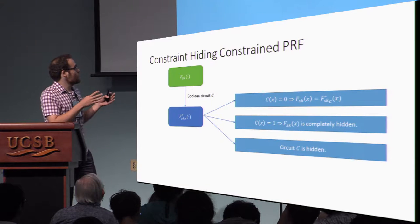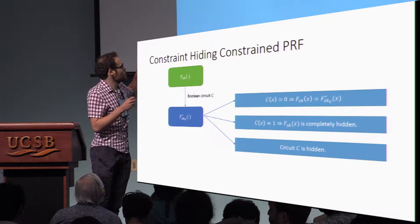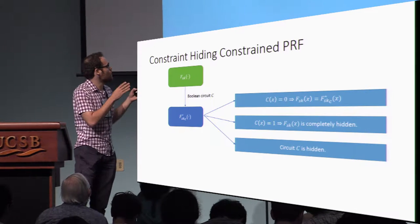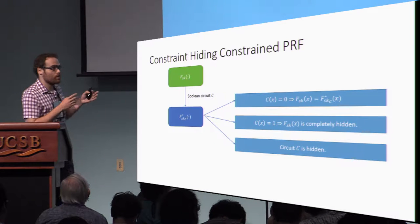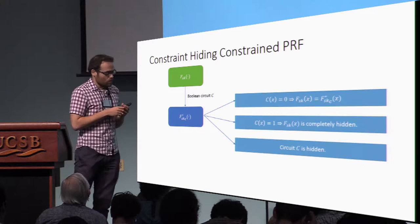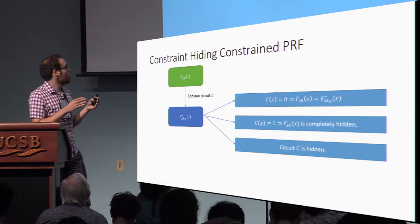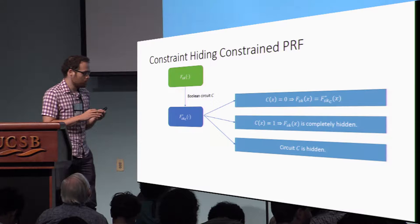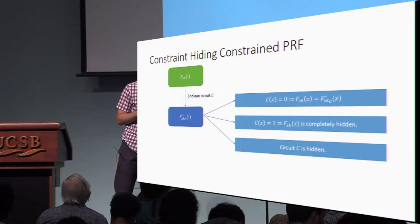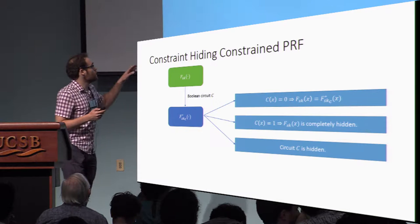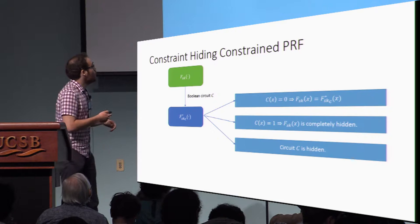So, as long as the input X satisfies C of X equals zero, the value of the constrained PRF and the true value of the PRF match. But if C of X is one, then the constrained version of the PRF reveals nothing about the true value of the PRF. Furthermore, the constrained version of the PRF hides the circuit C.